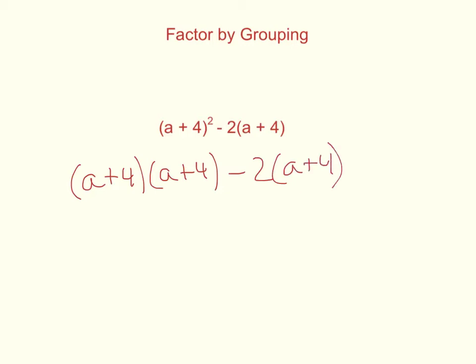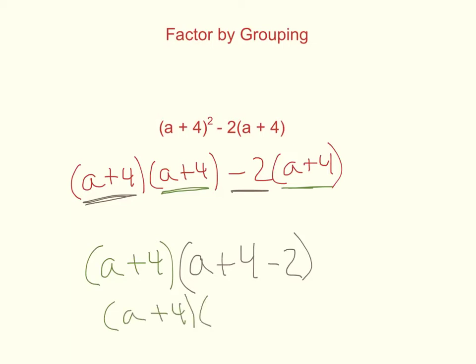This allows us to see the commonalities a bit easier. And if you look, you see that they both have an (a plus 4). So we're going to bring that to the front. And then we have to see what's left behind. So there's an (a plus 4) there, and there's also a minus 2. So that's going to go in the next piece, which is (a plus 4) minus 2. And we can simplify that. So our full answer is (a plus 4) times (a plus 2).